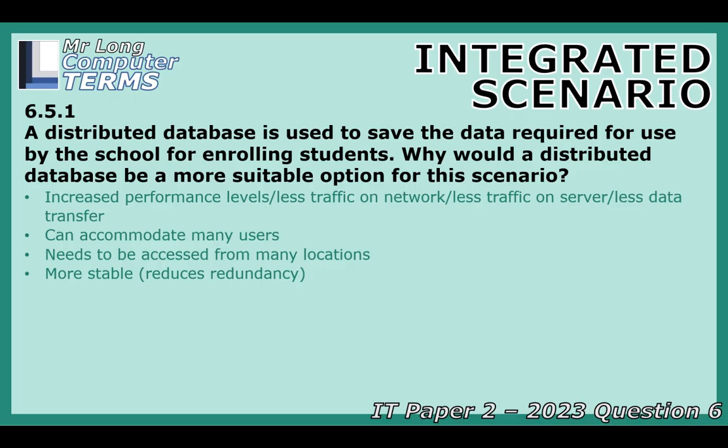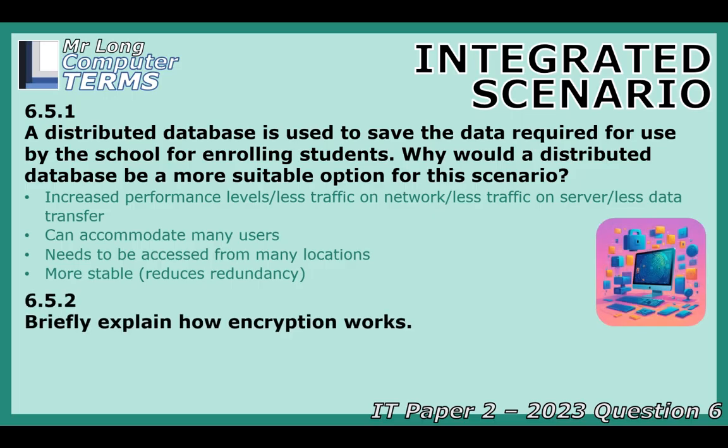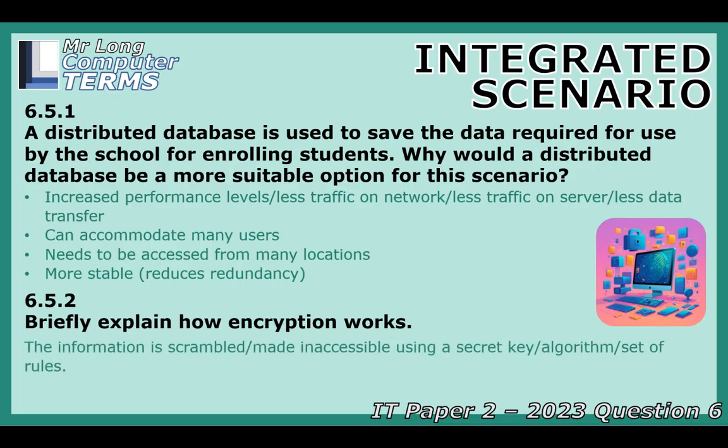Sharing private student info over networks means security is key. Encryption comes up. In simple terms, encryption is scrambling data — it uses a mathematical algorithm and a secret key to turn readable information into unreadable ciphertext, like a secret code. If that encrypted data is intercepted while traveling over the internet, it just looks like gibberish to anyone without the correct decryption key. Only the intended recipient with the key can unlock it and read the original message.